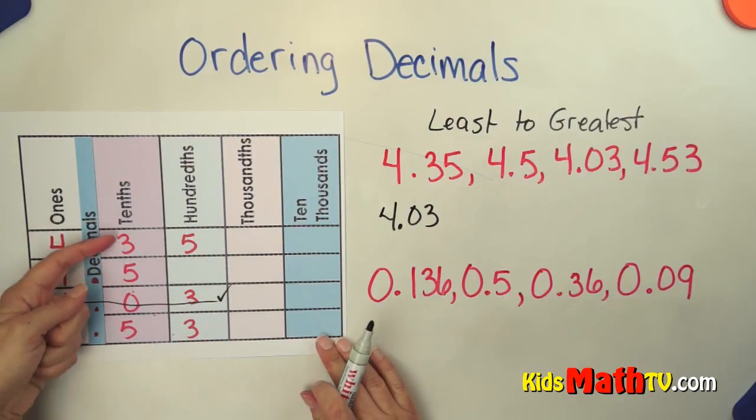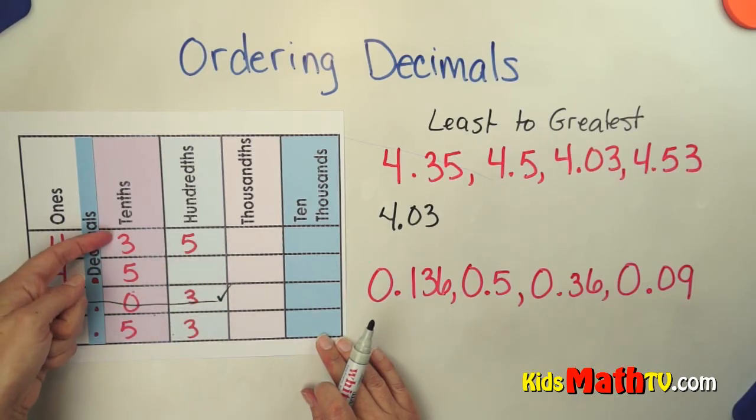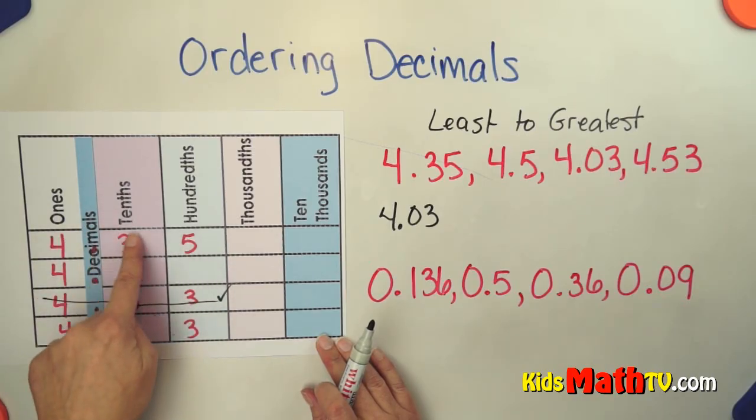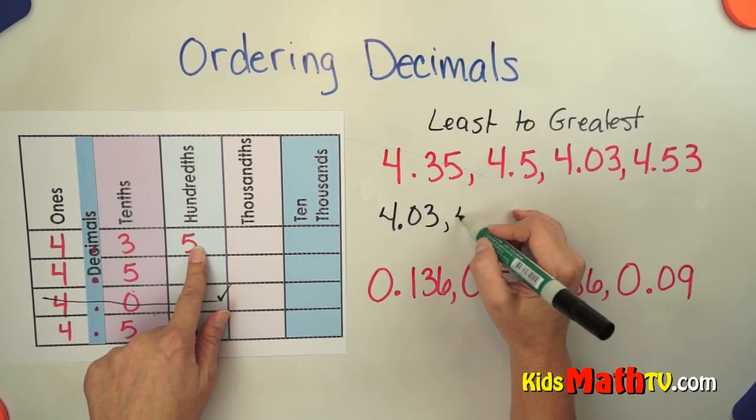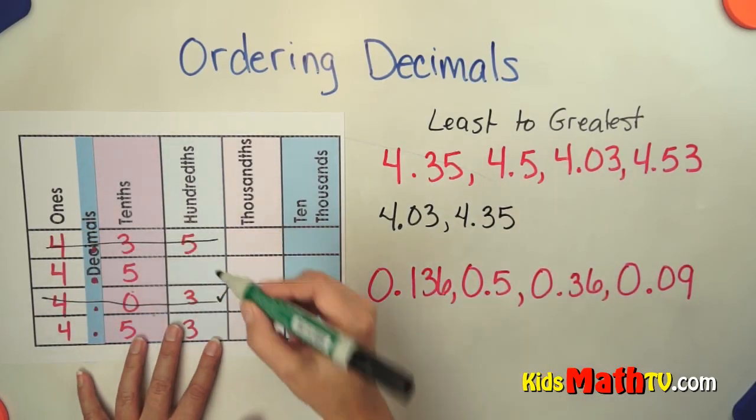Then we look for our next smallest tenths. Well, our next smallest tenths is 3. So this is our next largest tenth. Our next largest number is 4 and 35 hundredths. Cross that out.